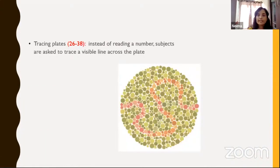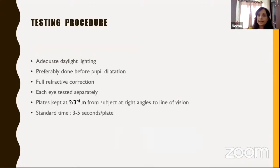Plates 26 to 38 are tracing plates — instead of reading a number, the subject is asked to trace the line visible across the plate. For testing color vision, the patient is seated comfortably with adequate daylight, preferably before pupil dilation, with full refractive correction in place. Each eye is tested separately, plates are held at two-thirds of a meter from the subject at right angles to the line of vision, and about three to five seconds per plate are given for analysis.